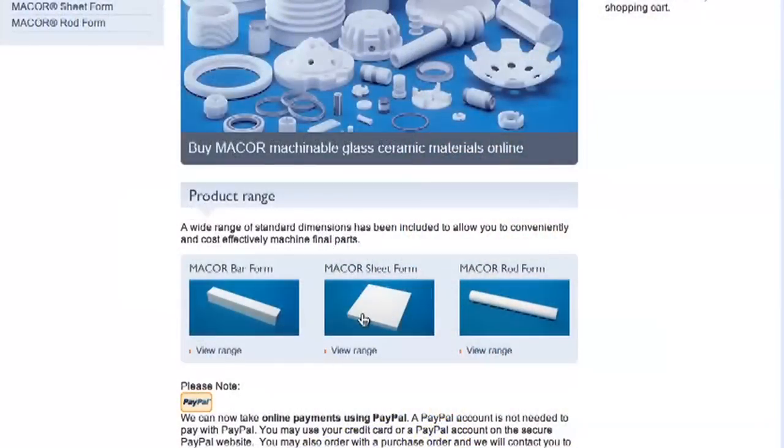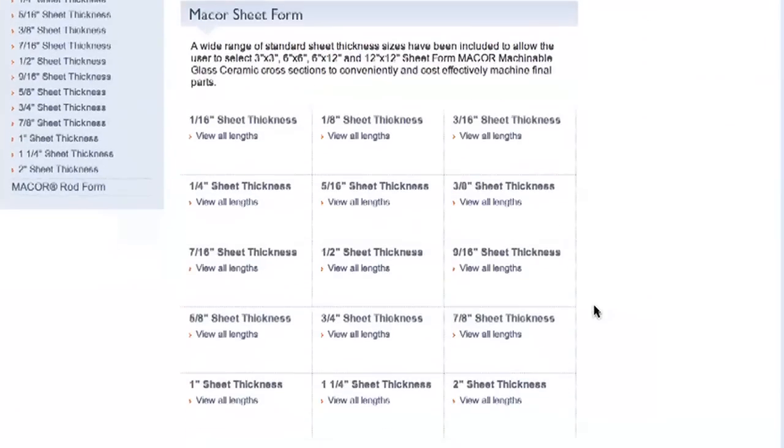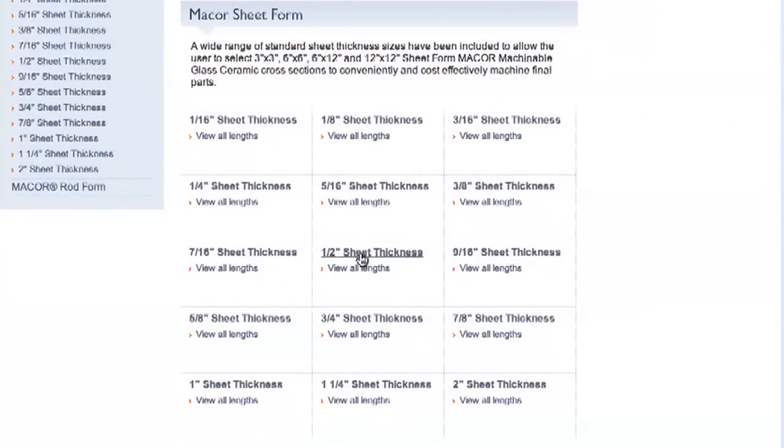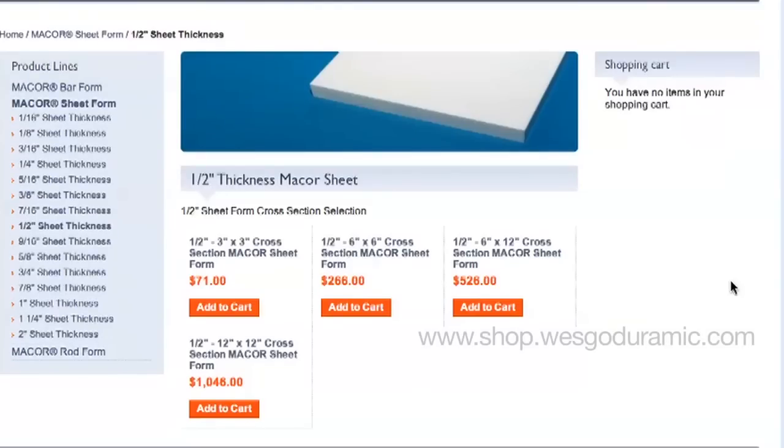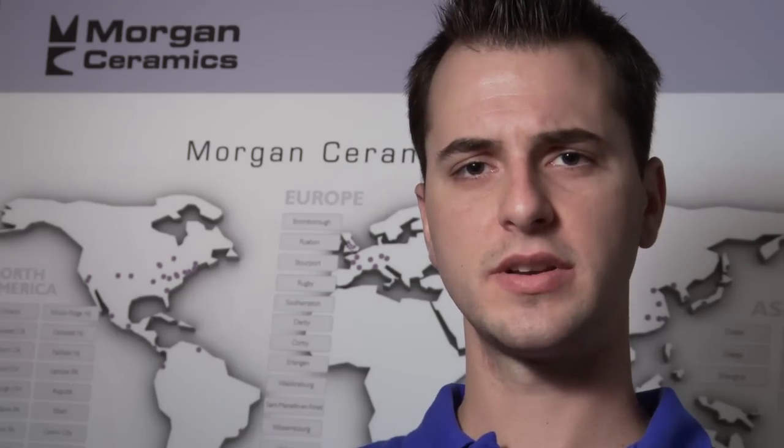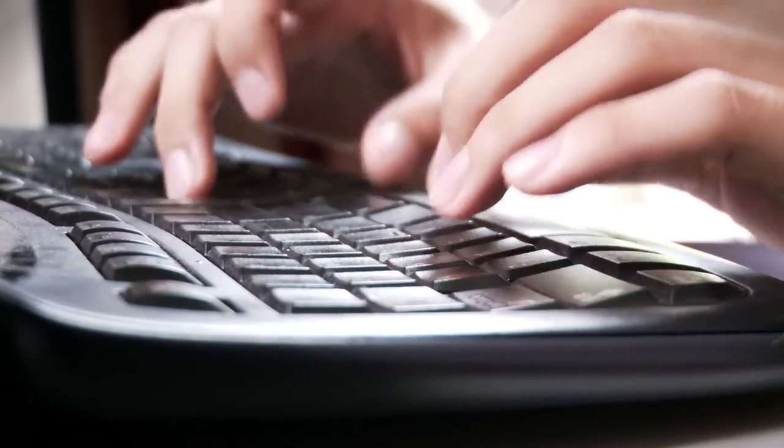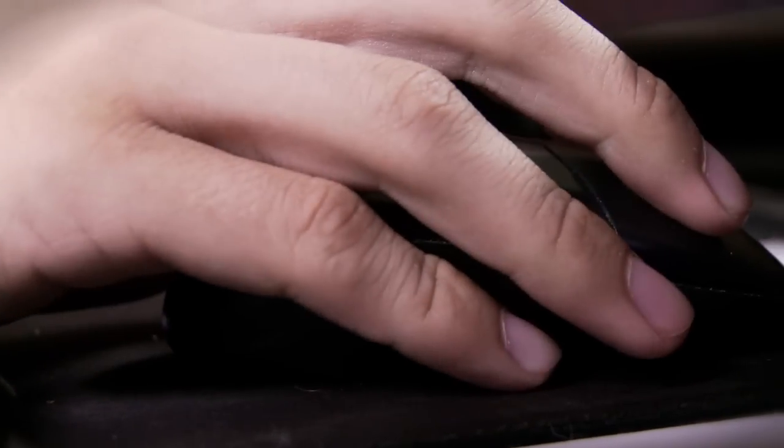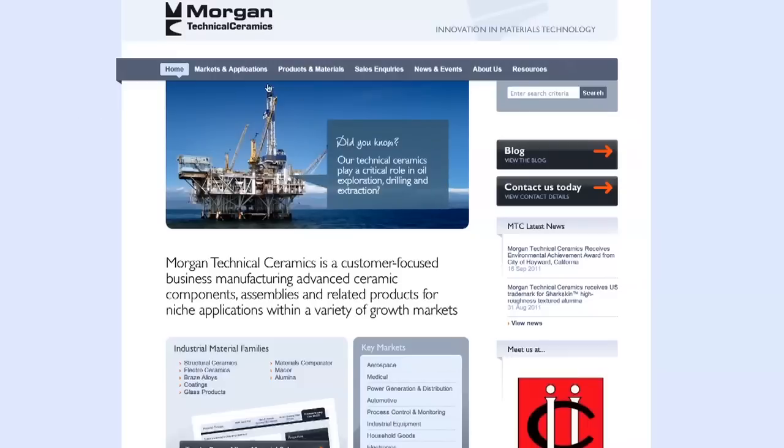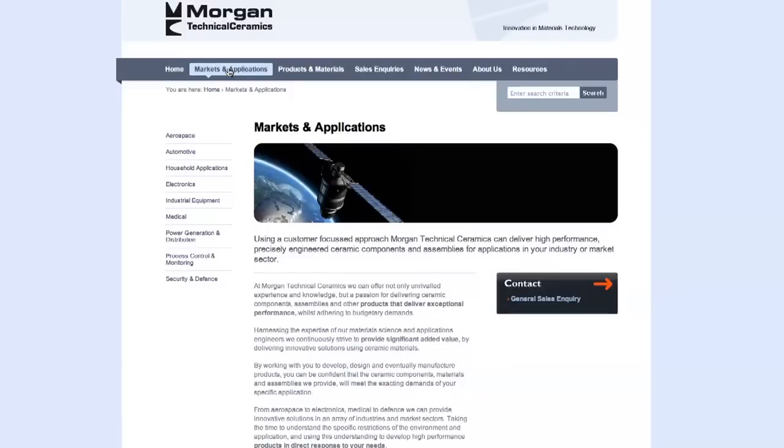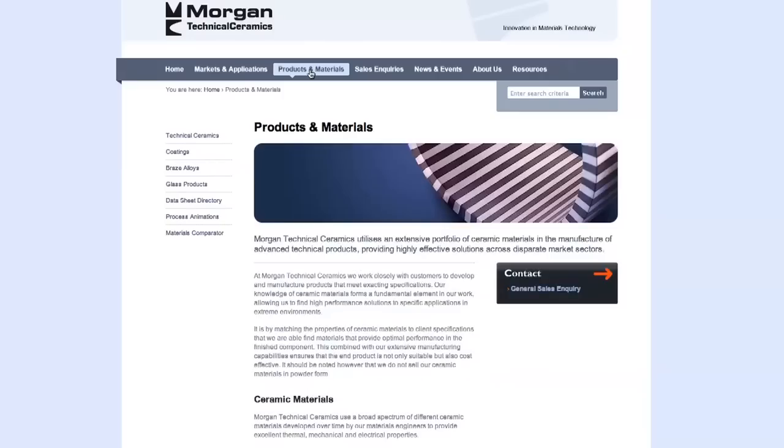For your convenience, Morgan Technical Ceramics offers online purchasing of a wide selection of stock Macor Glass Ceramic sizes. This can be viewed at shop.wescodoramic.com. Our online shopping experience offers secure credit card payment via PayPal, faster processing time, ease of navigation through the site, as well as knowing your shipping cost at the time of purchase.